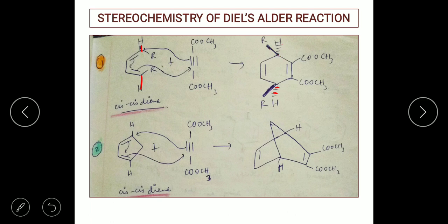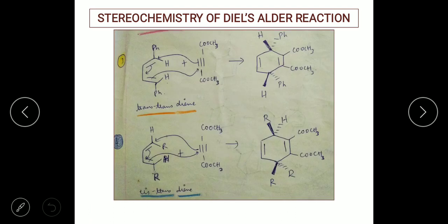There is one more example like this which gives rise to a bicyclic product. Another example is a trans-trans diene, where the Ph and CH2 are trans to the double bond on one end, and similarly the Ph at the para position and CH2 are again trans to the double bond on the other end. So it is an example for trans-trans diene.